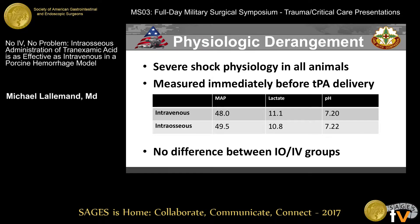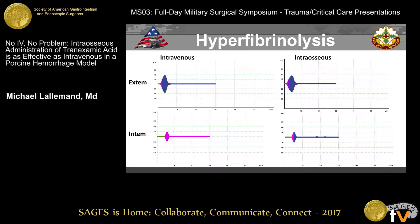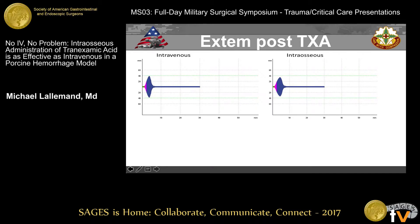At the time of randomization to IV or IO infusion, all animals demonstrated shock as evidenced by hypotension and acidosis, and there was no difference between the groups. Representative images confirm that hyperfibrinolysis was established in both the intravenous and intraosseous groups, with no difference between the two.